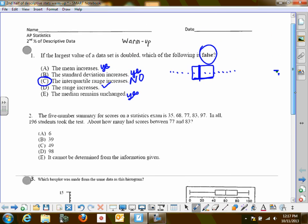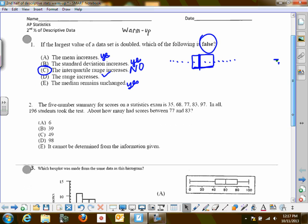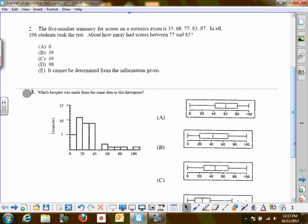Student asks: I thought it was like there was just another 175, so the range will change? Teacher clarifies: It's doubled like there's two of them. Oh, wow. Okay. All right.